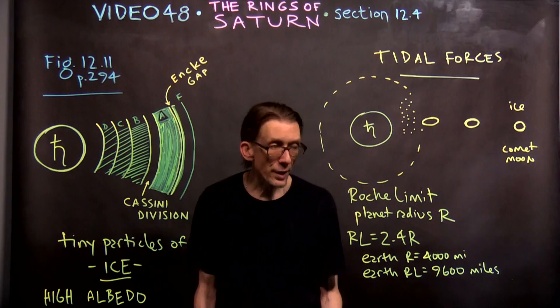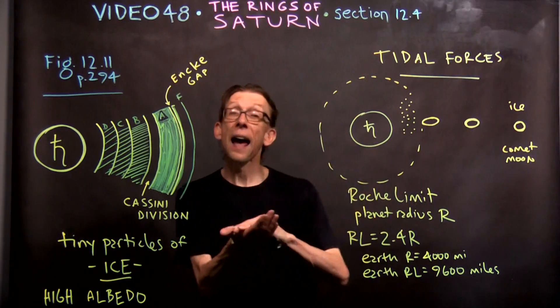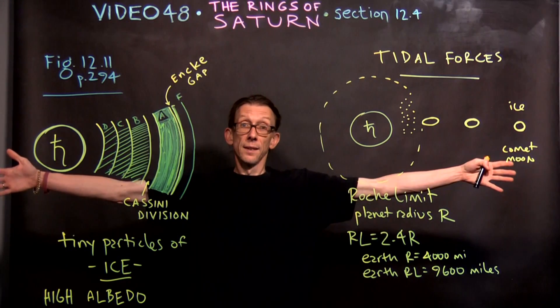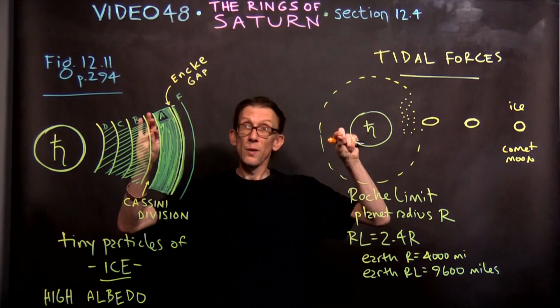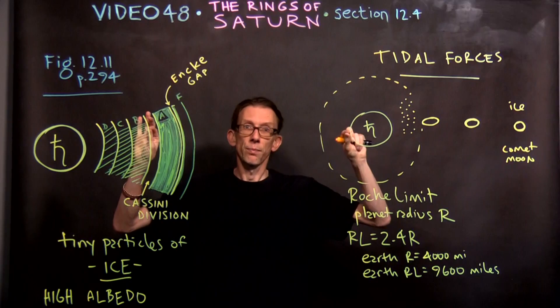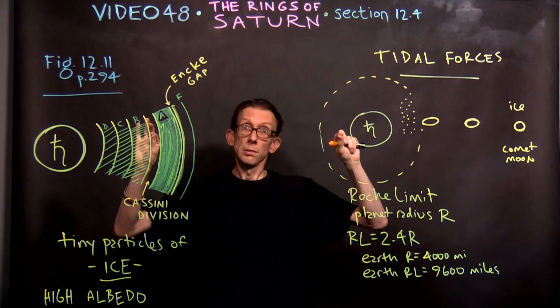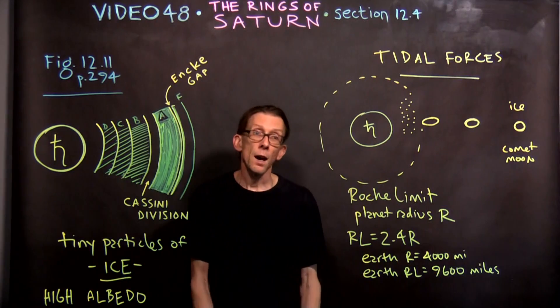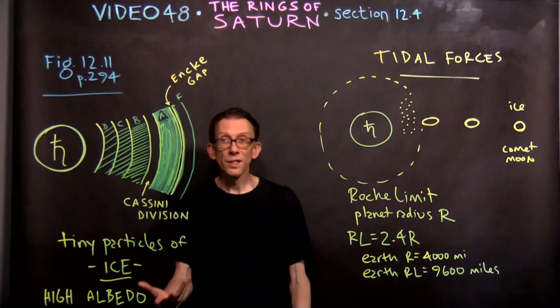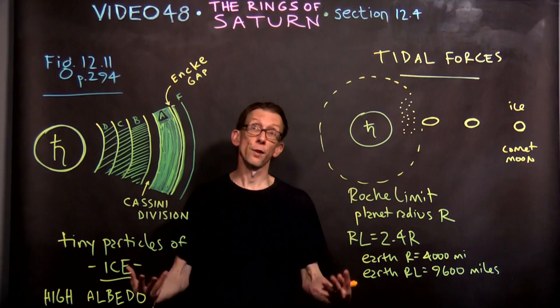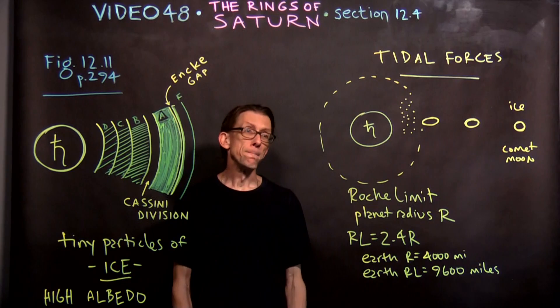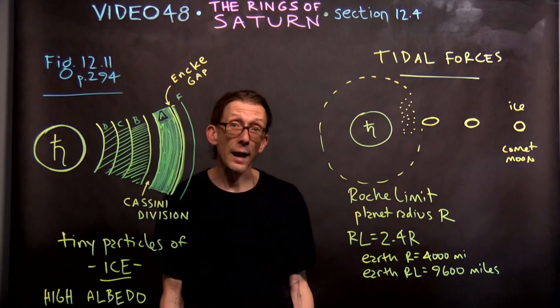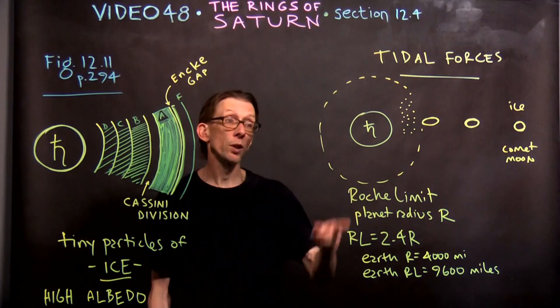Now, how these rings got so flat, they're hundreds of thousands of miles side to side, but they're only about a few miles thick. If not even that, not even that much. How they got so thin, that's a discussion they cover in the textbook, but I can't cover here in lecture. But there is a physical mechanism that would definitely cause these rings to flatten out over time. But anyway, we think that that's what caused the rings.